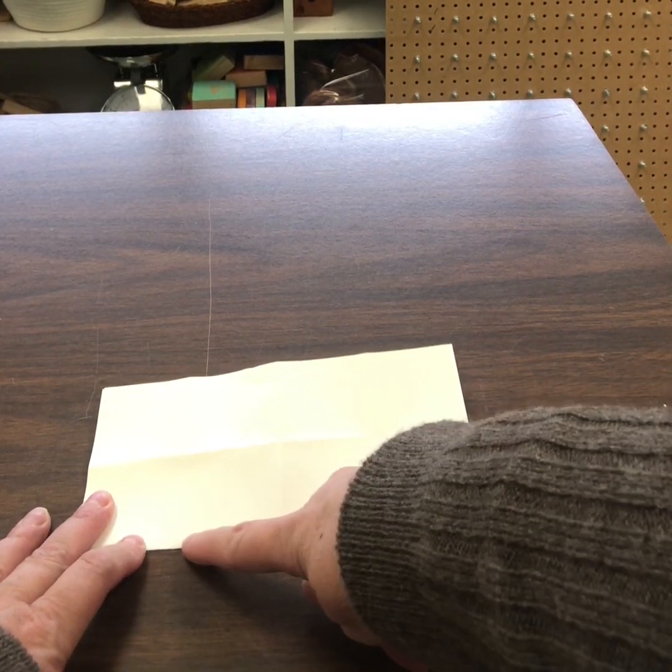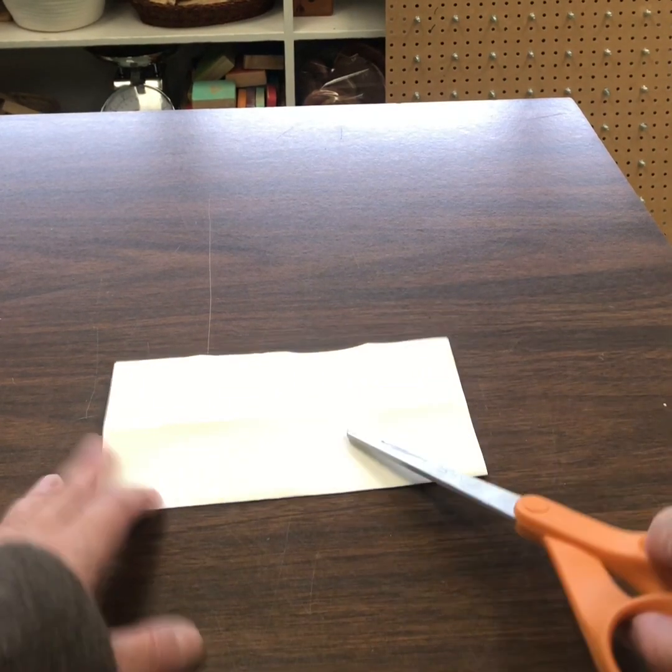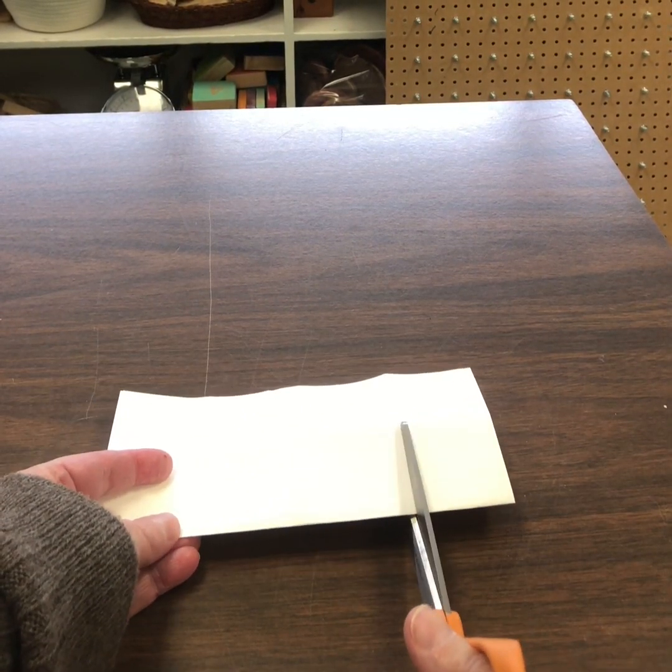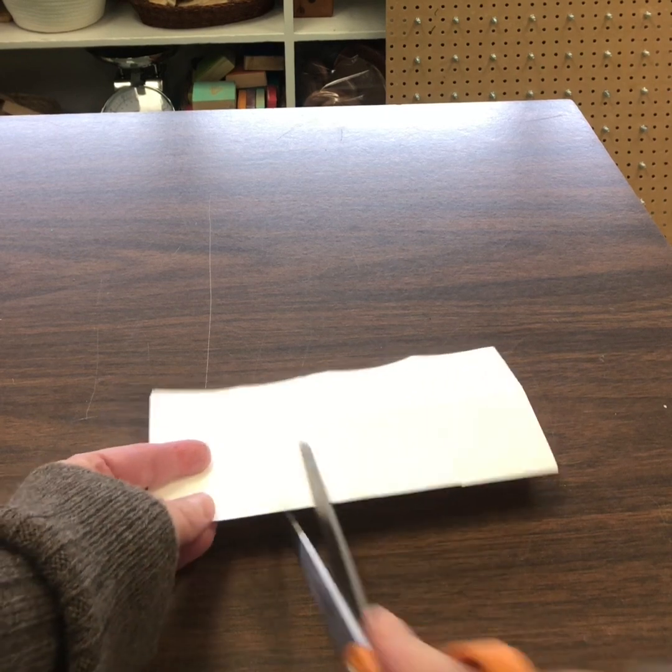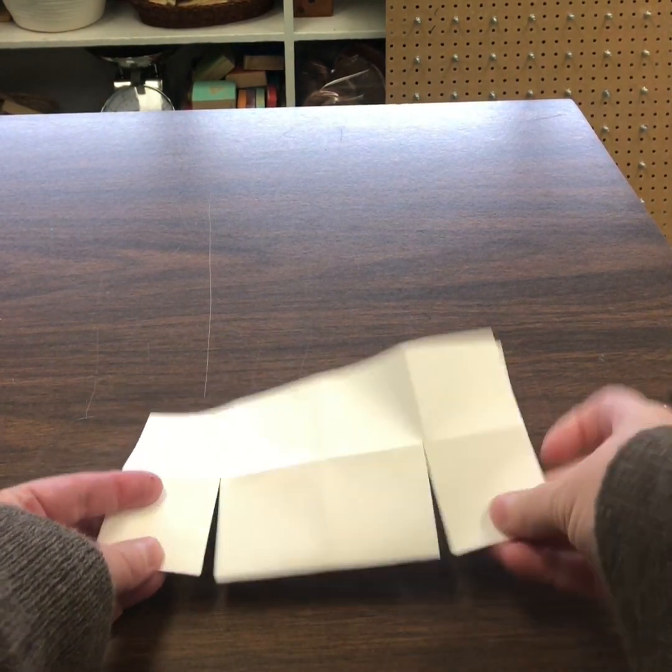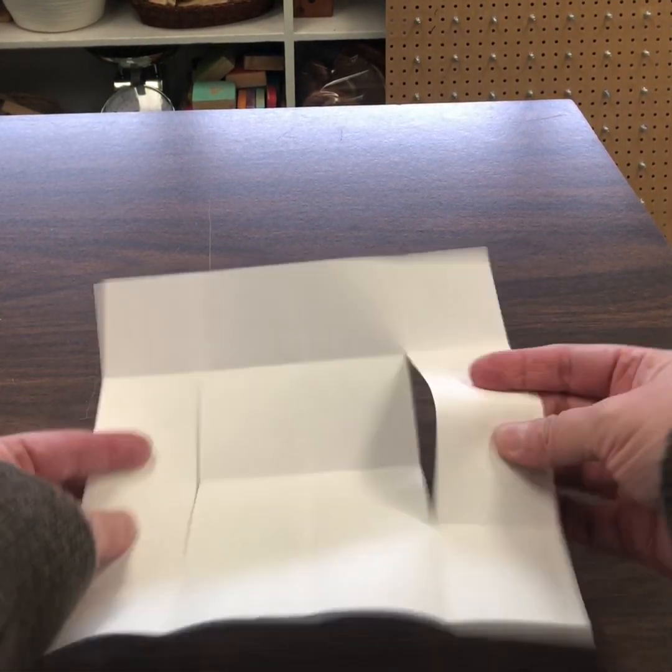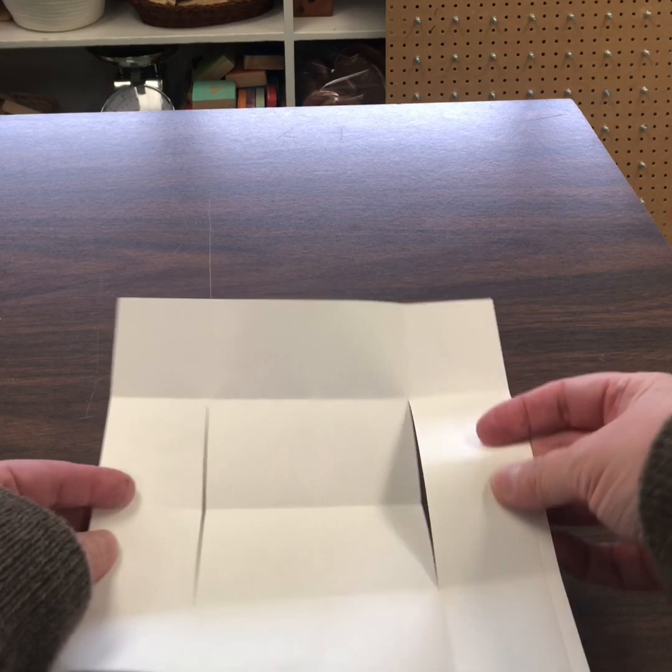And then the same thing on this side, from the bottom fold up to that fold line. You can mark it with pencil or a ruler if you want, but I'm just going to use my eyes here. One snip there and then one snip there. Okay, so it kind of looks like that. If we open it up, there's two slits like this.